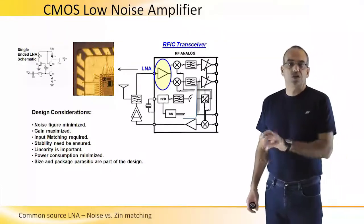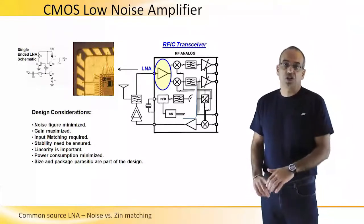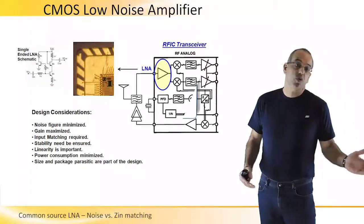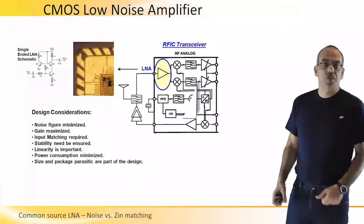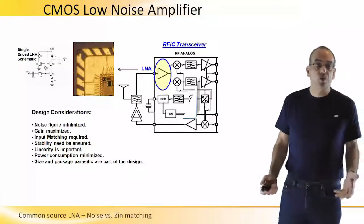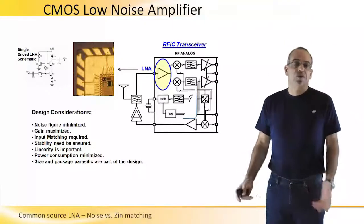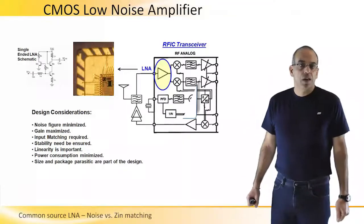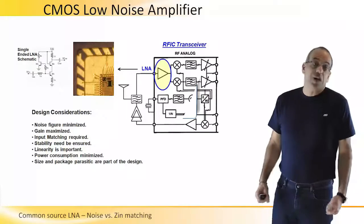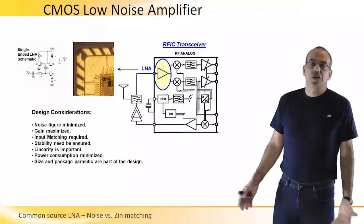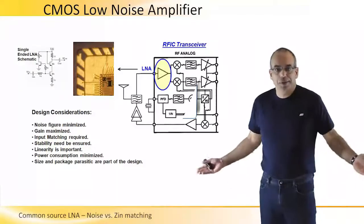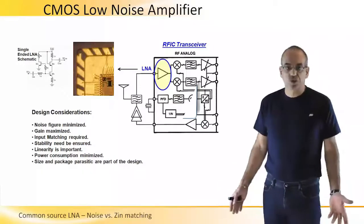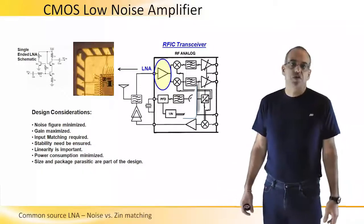As the first stage in the receiver, the LNA needs to be matched to the board and external environment — typically a 50 ohm match, or 100 ohm differential for a differential topology. It must also be stable; otherwise it behaves as an oscillator and is not functional.